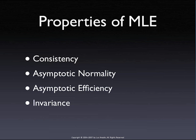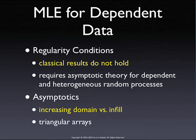Now we get into the difficult domain. The maximum likelihood in classic textbook derivation is for independent, identically distributed observations. The moment you introduce spatial dependence, several complications arise. As we saw yesterday, several of these spatial models induce heteroscedasticity, which violates the constant variance assumption of stationarity. So then we have to start from scratch — a lot of the classical results do not hold in the presence of spatial correlations.